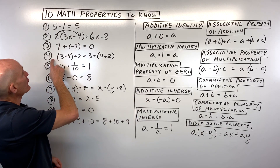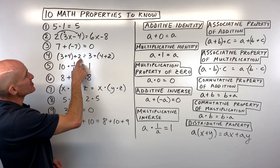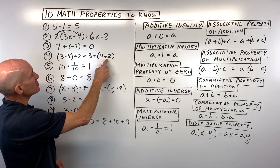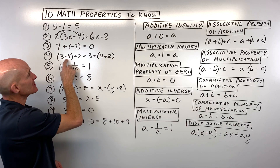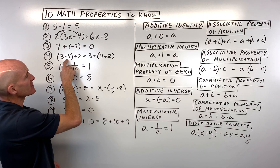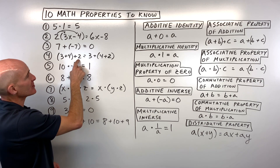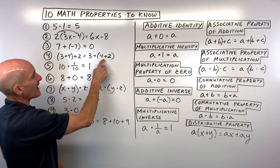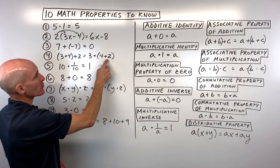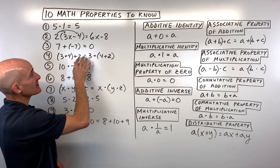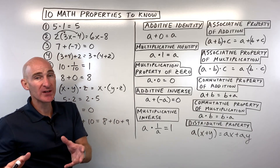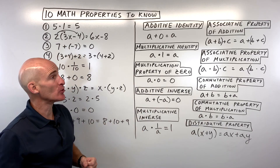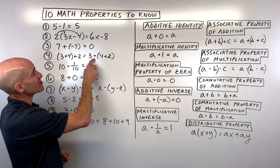For number four, (3 + 4) + 2 = 3 + (4 + 2). Here we add three plus four first to get seven, plus two is nine. There we add four plus two first to get six, plus three is nine. Same answer, but we grouped a different set of numbers — that's the associative property of addition.